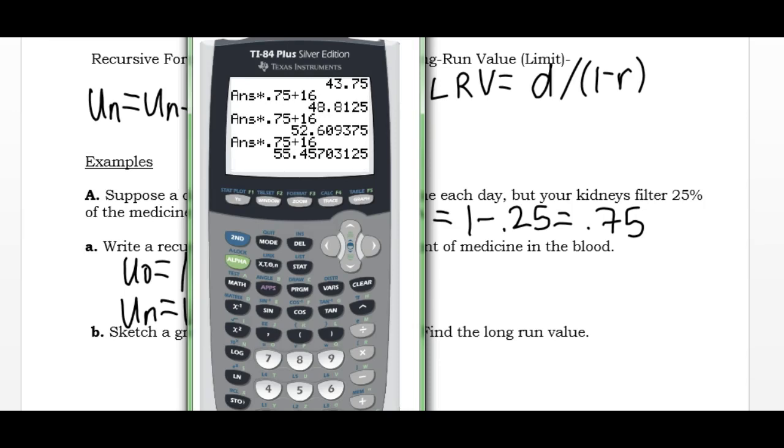We can see that it's increasing every day, but the amount that it increases by decreases gradually. And if I kind of kept going, and I'm just going to do a bunch of these, this is what a long-run value is. You can see that eventually the value is going to level off and it's going to stop changing. That's a long-run value.